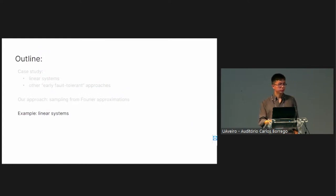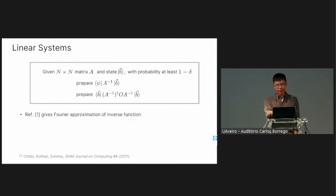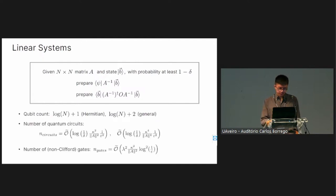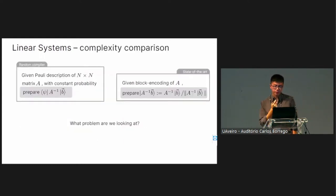For the concrete linear systems example, our approach solves a third type of problem — not quite the classical problem, not quite the traditional quantum linear system solver. We can compute overlap quantities and measure general observables, where the function of interest is the inverse function. The qubit count is logarithmic plus a constant, and we can write down the complexity for the number of circuits and maximum gate depth. We have dependence on condition number kappa and on the Pauli weight lambda in the gate depth.